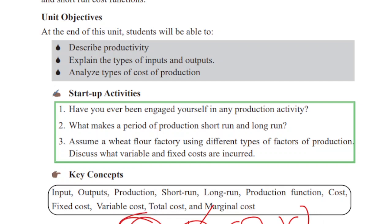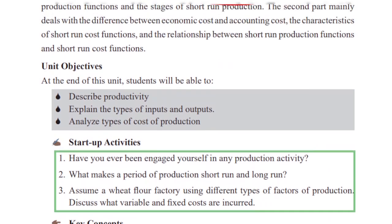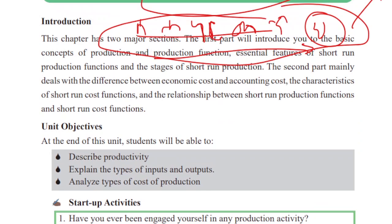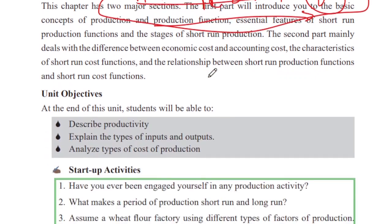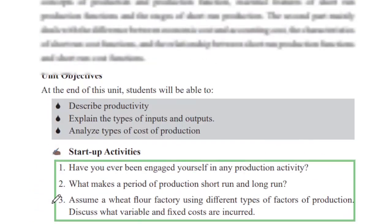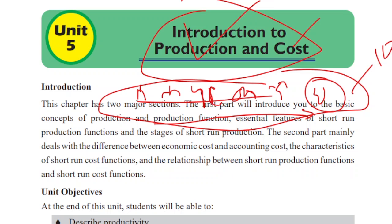Production. The output produces the output process as the production. Production is related to the process of converting input into output.